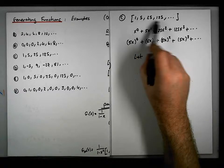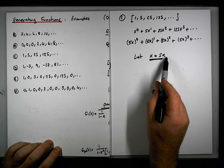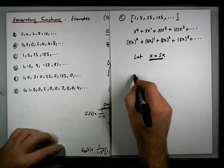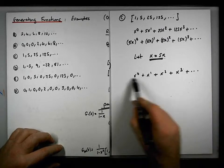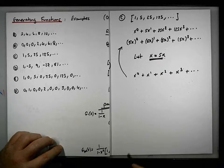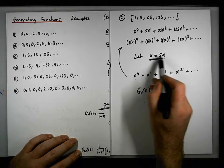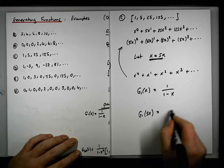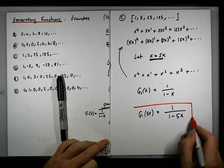So what this effectively is — to get to here, we're letting x be equal to 5x. So if you think about this: x to the 0 plus x to the 1 plus x squared plus x cubed plus dot dot dot — that's effectively the constant sequence. But we're going to let x be 5x, which effectively gives us this thing up here. So the constant sequence has a generating function which is 1 over 1 minus x, and we're making the substitution letting x be 5x. So what we now have is g1 of 5x equals 1 over 1 minus 5x. That's the generating function now associated with this geometric sequence.